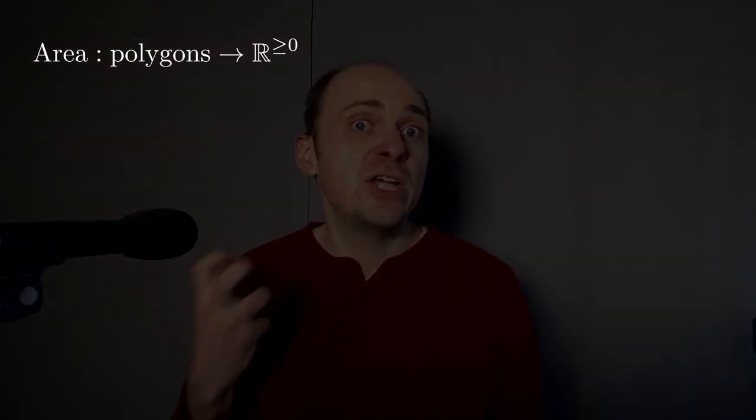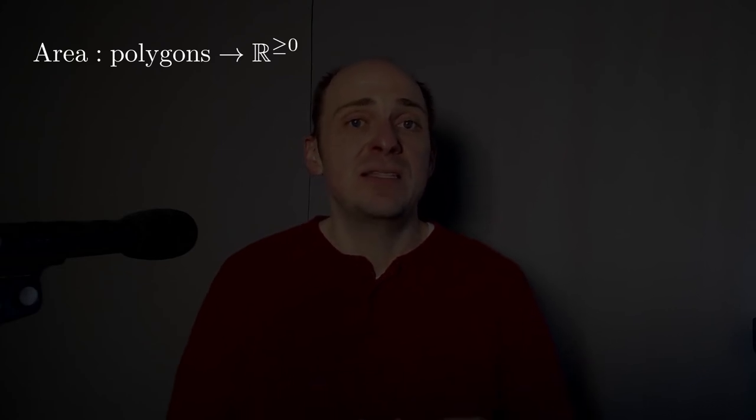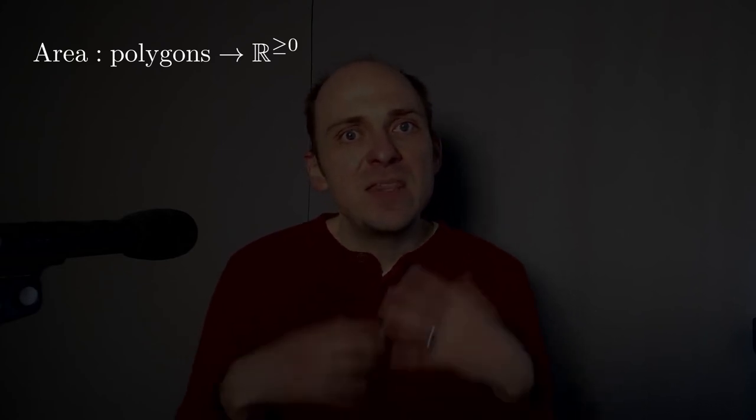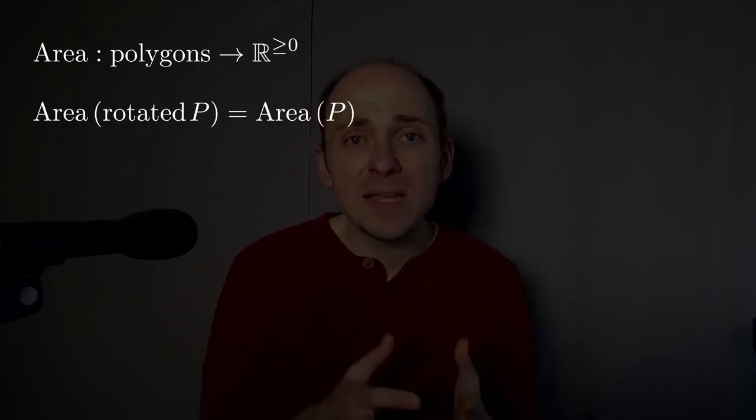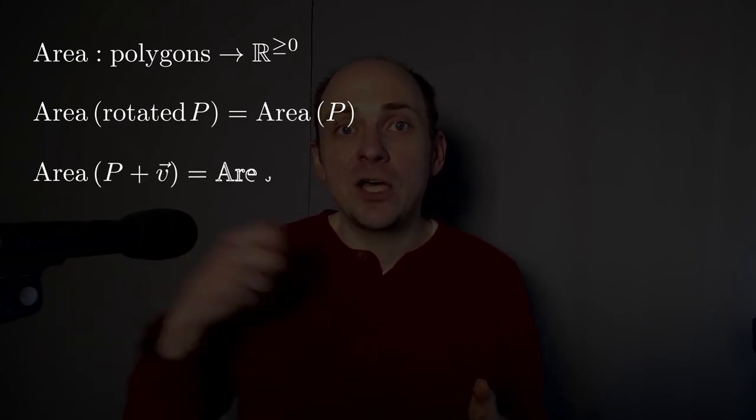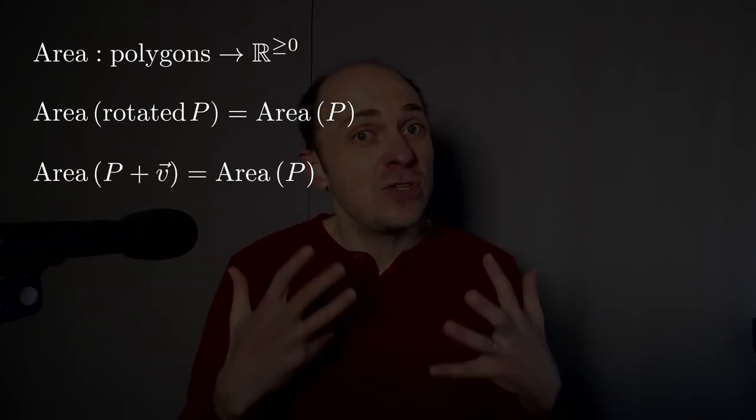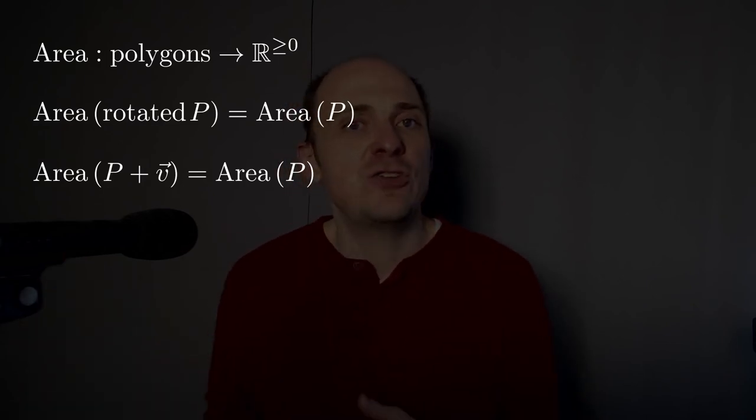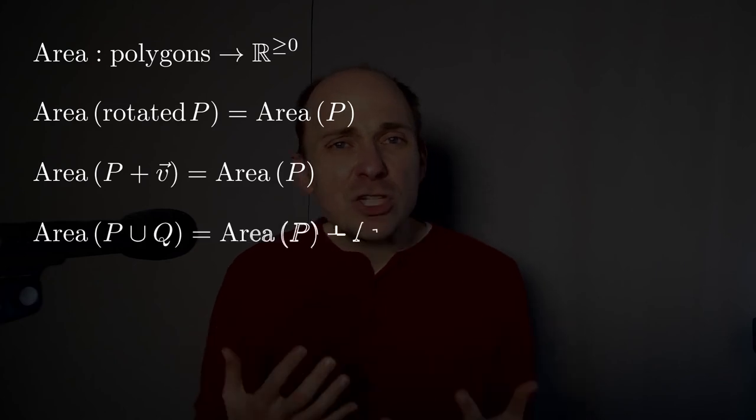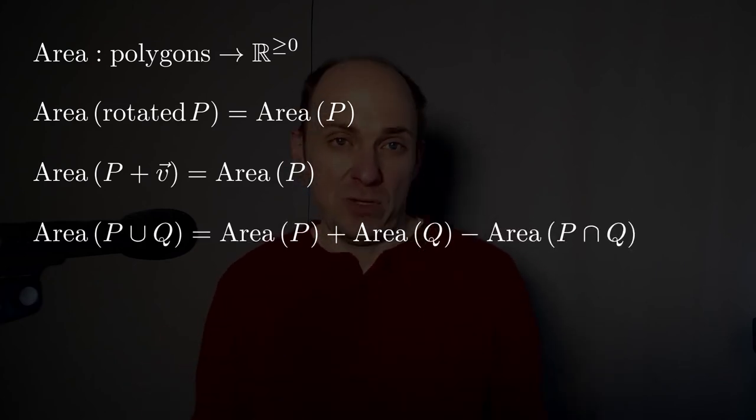Area should be a function that takes in a polygon and gives us some non-negative real number. It measures the area of polygons. As a function, it has certain properties. The area of a rotated polygon should be the same as the original polygon. If you translate a polygon by shifting along some vector, that should not change its area. So the area of P shifted by a vector V should be the same as the area of P. And area should satisfy some kind of inclusion-exclusion principle.